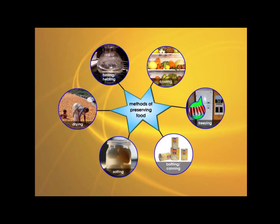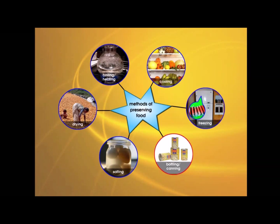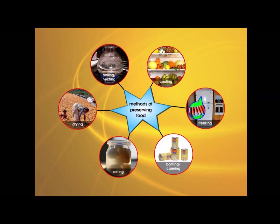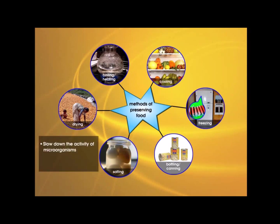There are different ways of preventing food from spoiling. They include drying, boiling or heating, cooling, freezing, bottling or canning, and salting. The basic idea of food preservation is to slow down the activity of microorganisms or kill the microorganisms altogether.